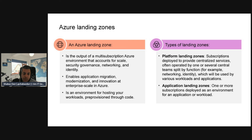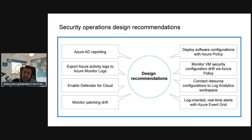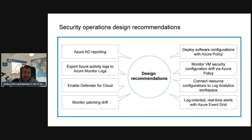There are two main types of landing zones. First is the platform landing zone: subscriptions deployed within a centralized service, often operated by a central team split by function — for example, a networking team, identity team, etc. — used for various workloads and applications. Then we have the application landing zone: one or more subscriptions deployed as an environment for an application or workload, which you can split into dev, test, and production.